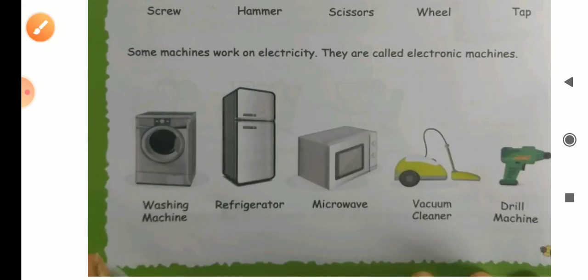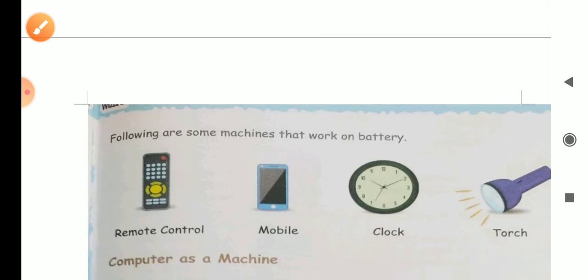And next is there are some examples, some machines that works on electricity. They are called electronic machines. Like washing machine, refrigerator, microwave, vacuum cleaner and drill machine. These are some examples that works on electricity.